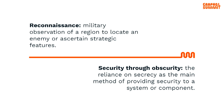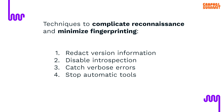You need to find some balance. You don't want to spend too much time on preventing reconnaissance — you don't want to spend more time than attackers would spend on this stage. Practically, what you could do to complicate reconnaissance: redact version information, disable introspection, look at the errors the server is producing, and use tools providing bot protection or protection from automated tooling.